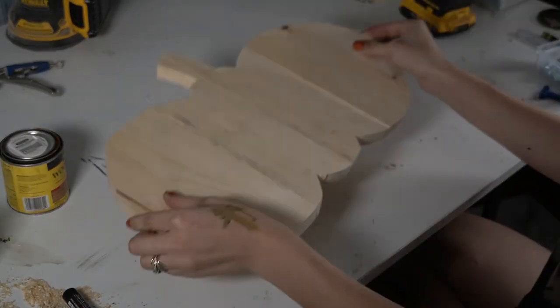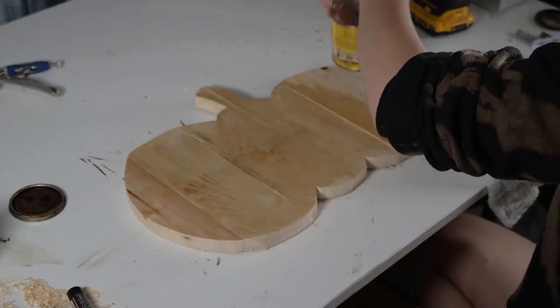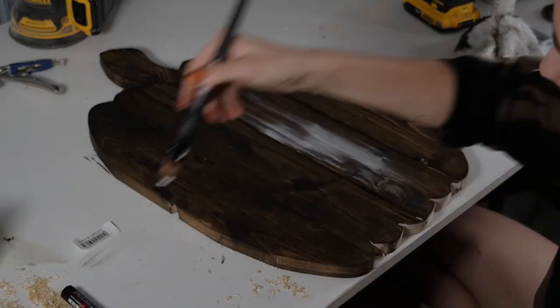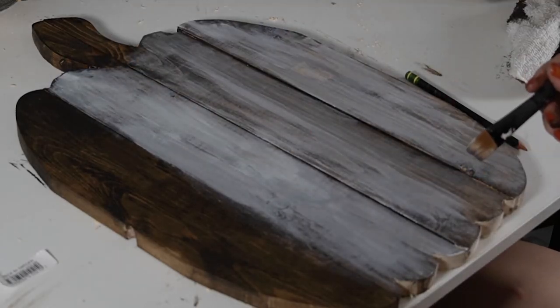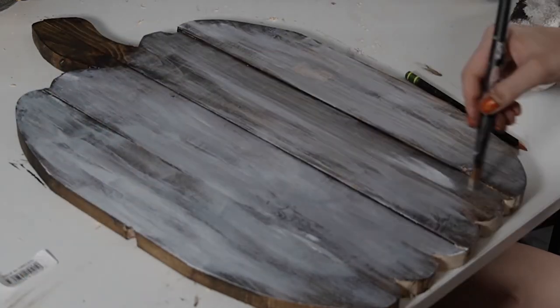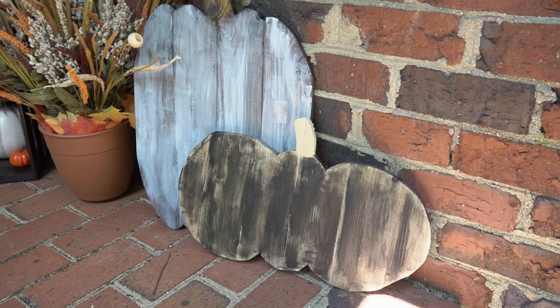And for the tall pumpkin, I stained it using a darker stain, and for the shorter pumpkin a lighter stain. And once the tall pumpkin was dry, I took some white paint and began to dry brush white paint over the whole pumpkin, leaving the stem paint-free. And then with the short light pumpkin, I did the same thing using black paint.